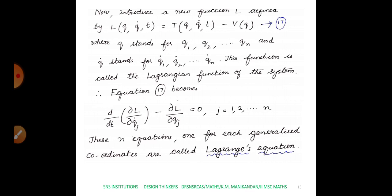These n equations, one for each generalized coordinate, are called the Lagrangian equations of motion. For n generalized coordinates we get n Lagrangian equations. Thus we have derived the Lagrangian equation of motion for holonomic constraints.